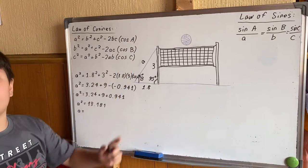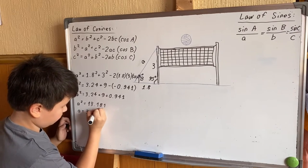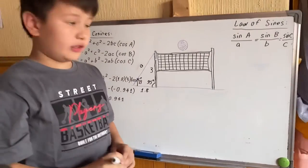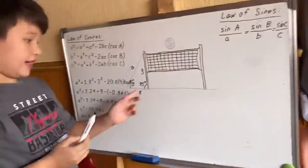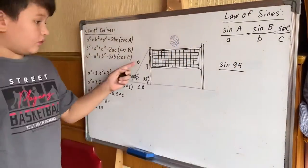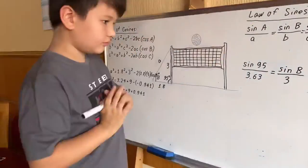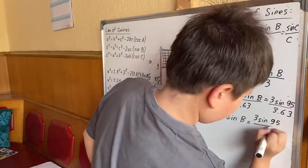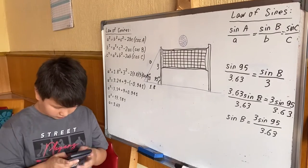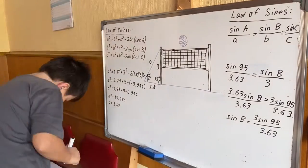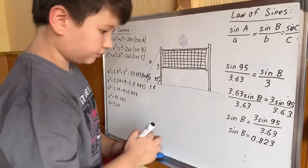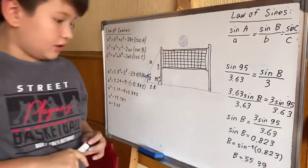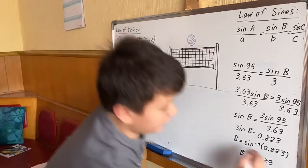So the length of the rope is 3.63 meters. Now we need to find the angle that the rope makes with the ground — for this we'll use the law of sines. B is equal to 55.39 degrees.